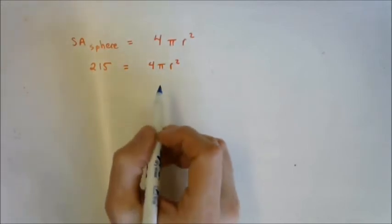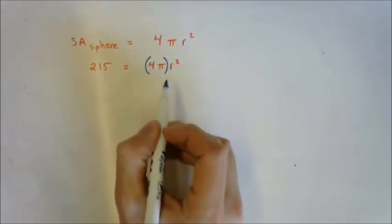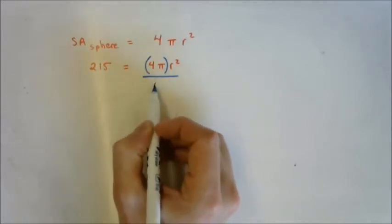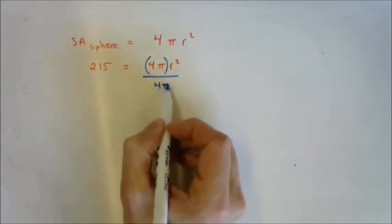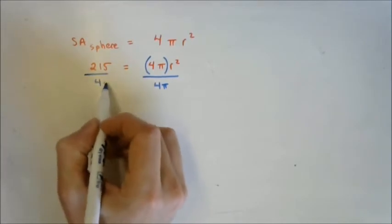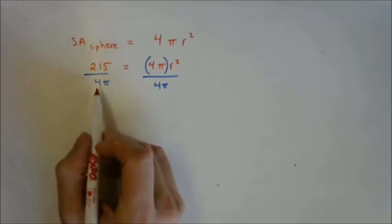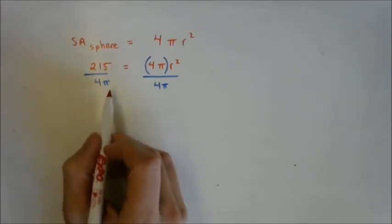Right now, r is attached to 4π by multiplication, so I can divide both sides by 4π. In your calculators, this is a little bit tricky. What you're going to do is you're actually going to do four times π, and then you can rewrite that another way: 12.6.